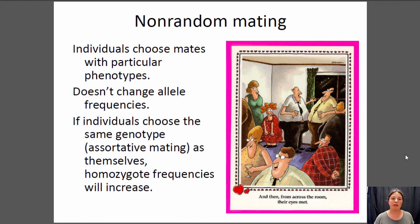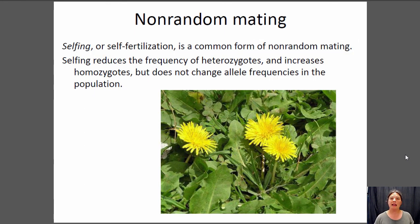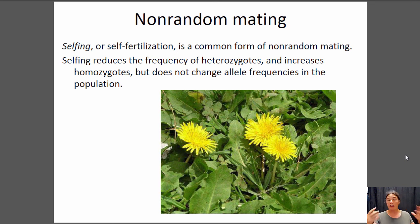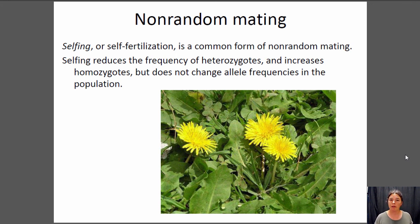One of the most extreme types of non-random mating is selfing. Many plants do this — they mate with themselves. You can't mate with anyone more like you than yourself. If you're a plant that produces both sperm and eggs, which most plants do, and you fertilize your eggs with your own sperm, that's a very extreme case of assortative mating. When you self, you tend to see a great increase in homozygosity and a great decrease in heterozygotes. One great example is the dandelion — dandelions almost always self, so any dandelion in your yard has selfed so many times they're basically clones of themselves, with very little genetic variation. They're just really, really good at being dandelions.